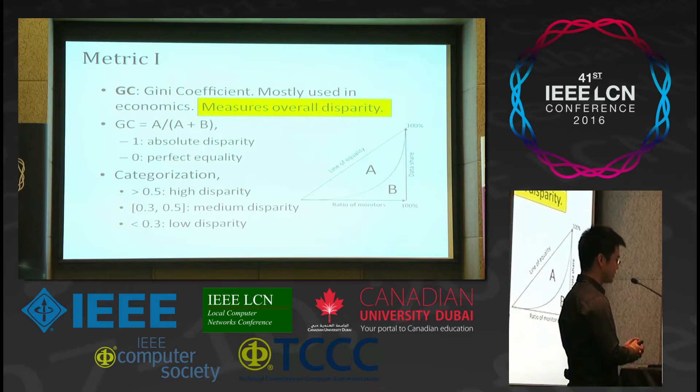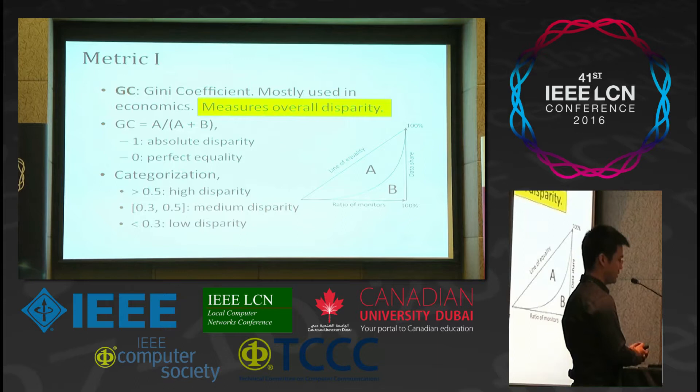Perfect equality means that each monitor contributes the same amount of data. Traditionally, people categorize the Gini coefficient into three types: if it is larger than 0.5, it is high disparity; if it is between 0.3 and 0.5, it is medium disparity; and if it is less than 0.3, it is low disparity.